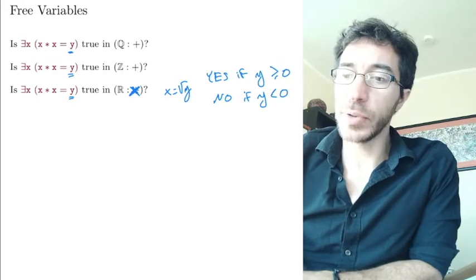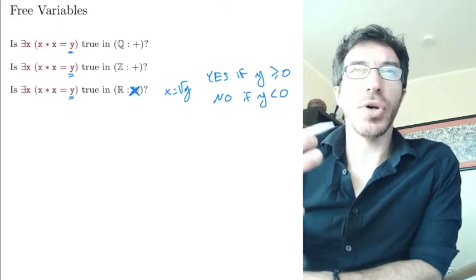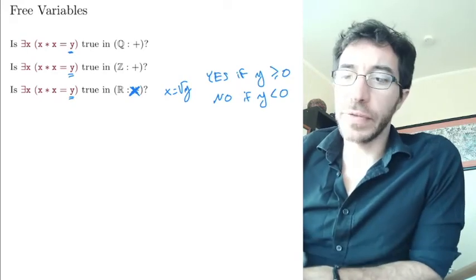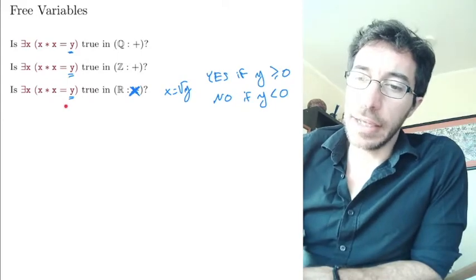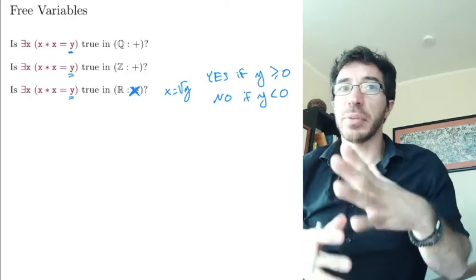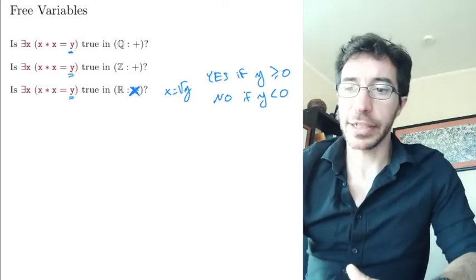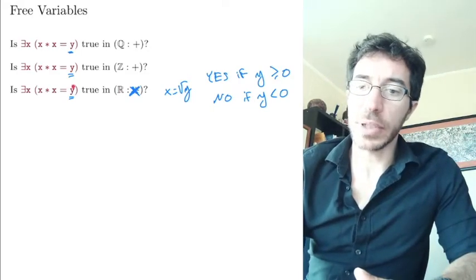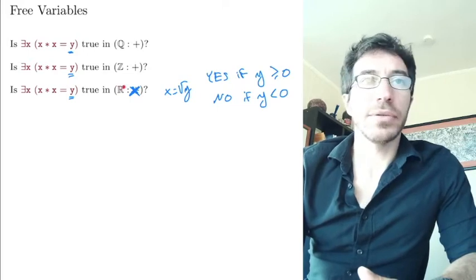If it's positive in this case, it's going to be true. If it's negative, it's going to be false. So to be able to assign a truth value, we need to assign a value to y. But it's not a truth value that we assign to y. These variables represent elements in our structure. So in this case, we need to assign a real number to y.